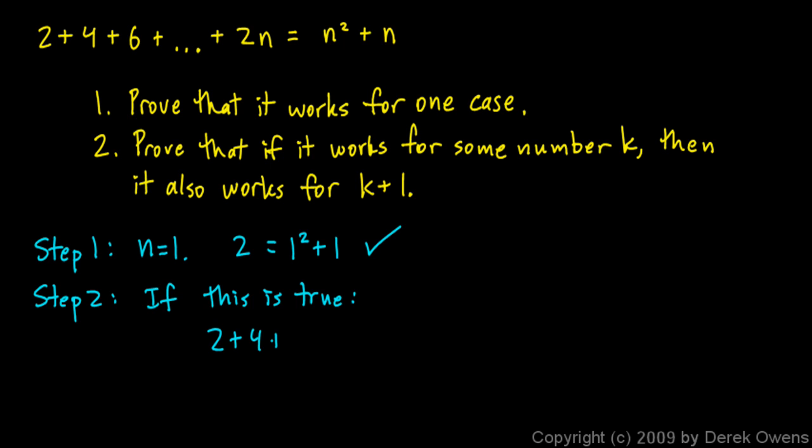2 plus 4 plus 6, and so on, up to, not 2n, but up to 2k, if it works for some number k, that equals k squared plus k, that if that is true, then this is also true, that it works for k plus 1.